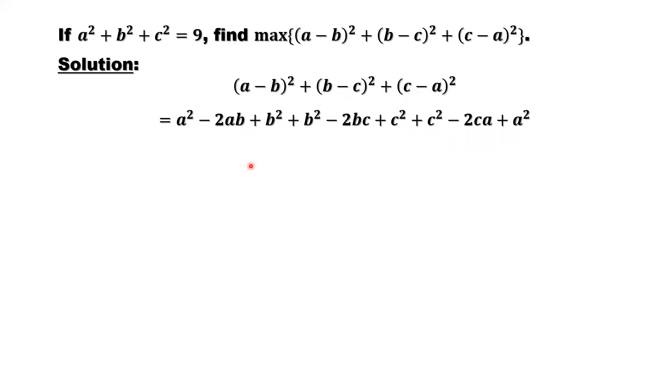So here, put all square terms together. We have a squared here, we have another a squared here, b squared, b squared, c squared, c squared. So we have two times (a squared plus b squared plus c squared).